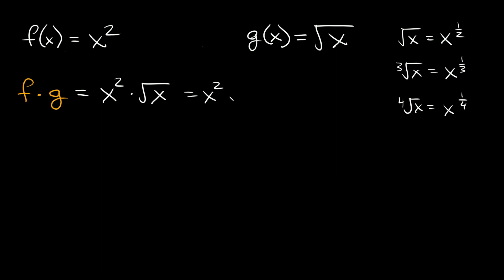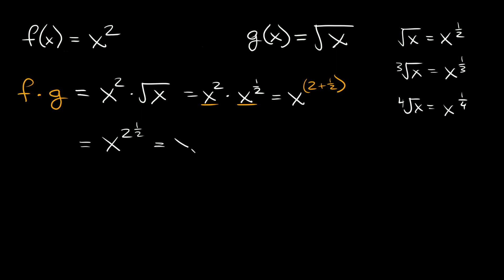So this is equal to x squared times x to the one-half. We have the same bases, so we just add the exponents together. This is equal to x raised to the two plus one-half, which is two-and-a-half, or five over two. So our final answer multiplied together is x raised to the five-halves.